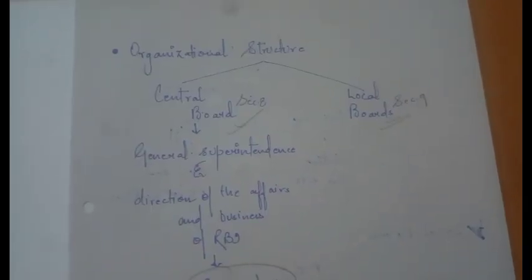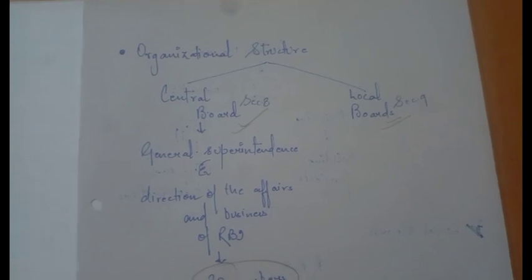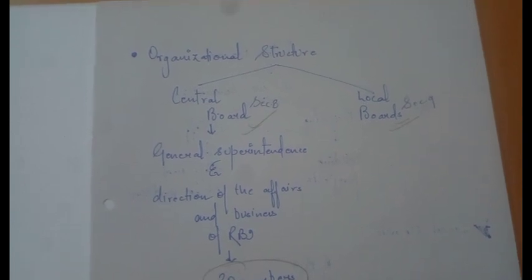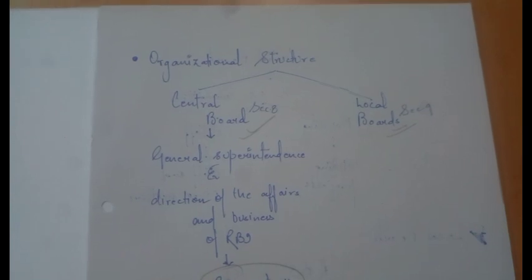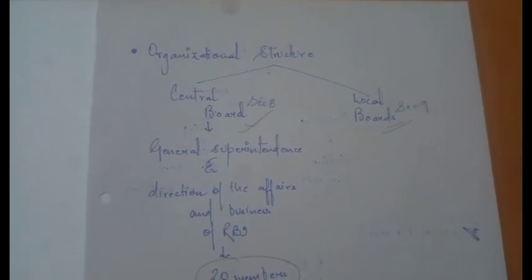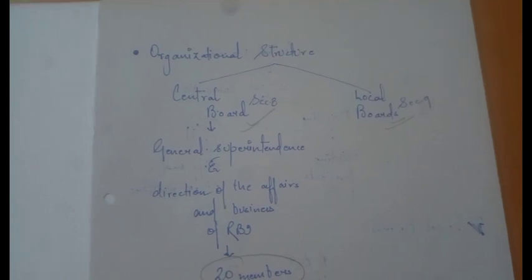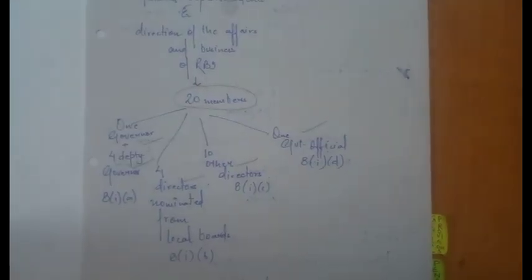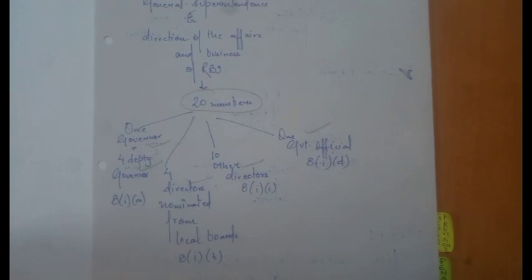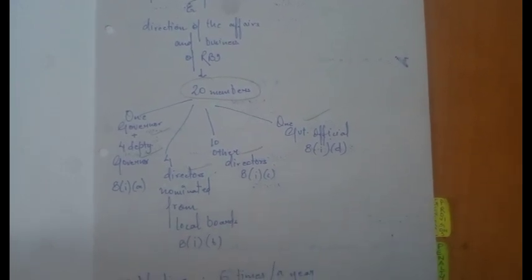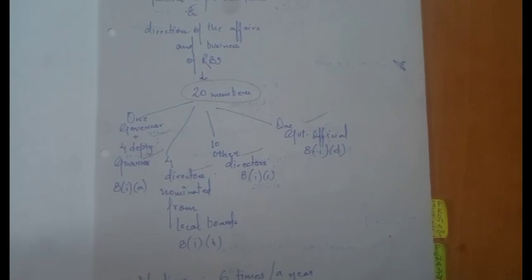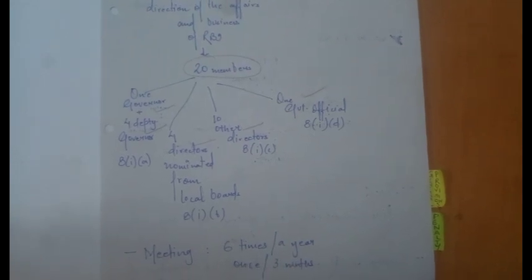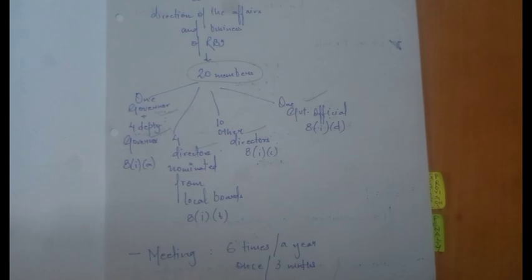The organizational structure of these authorities can be divided into two: the Central Board and the Local Board. The Central Board is covered under Section 8 and the Local Boards under Section 9. The Central Board handles general superintendence and direction of the affairs and business of RBI. It has 20 members: 1 Governor and 4 Deputy Governors, 4 directors nominated from local boards, 10 other directors, and 1 government official. They have meetings six times a year, or at least once every three months.